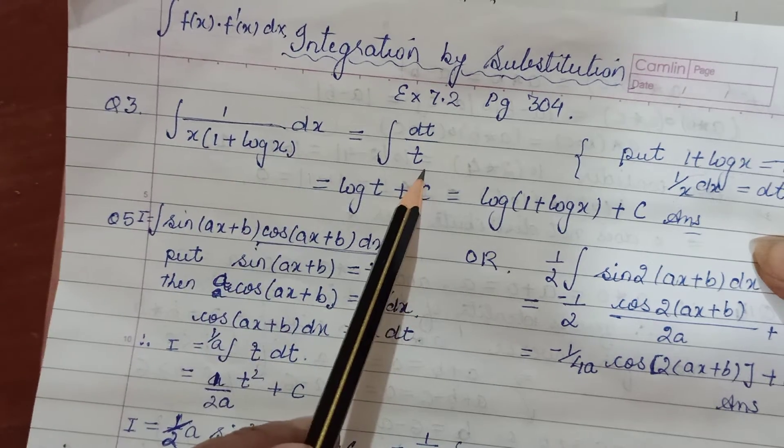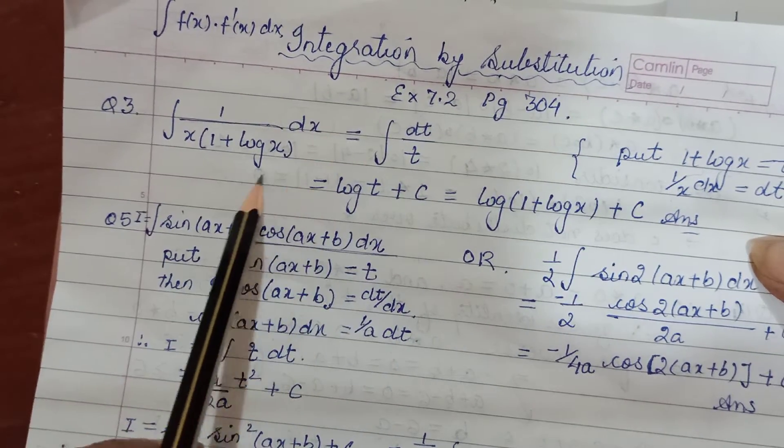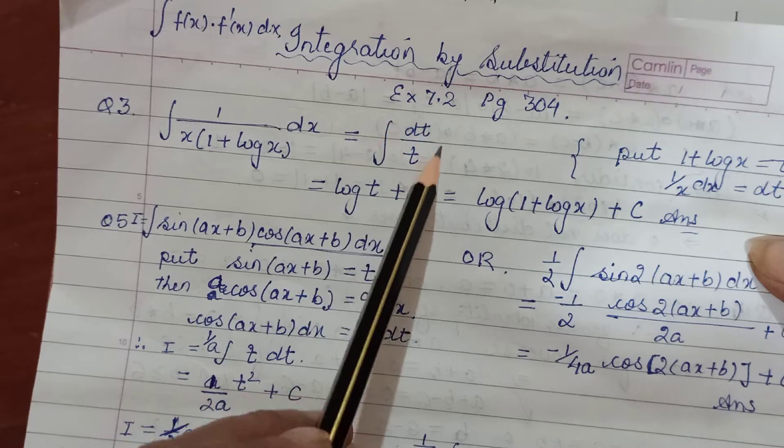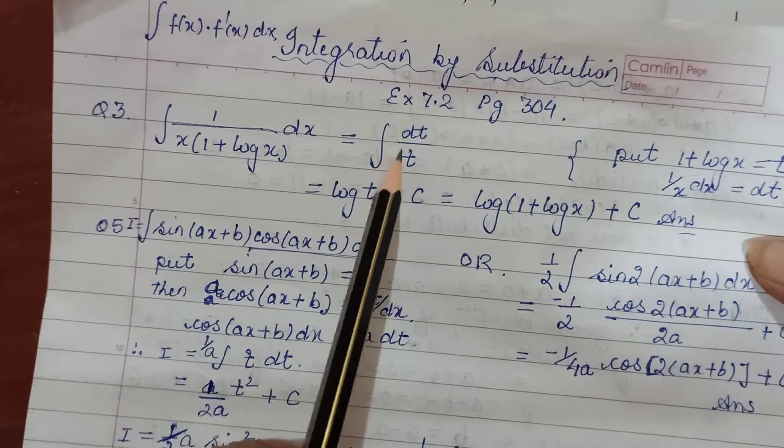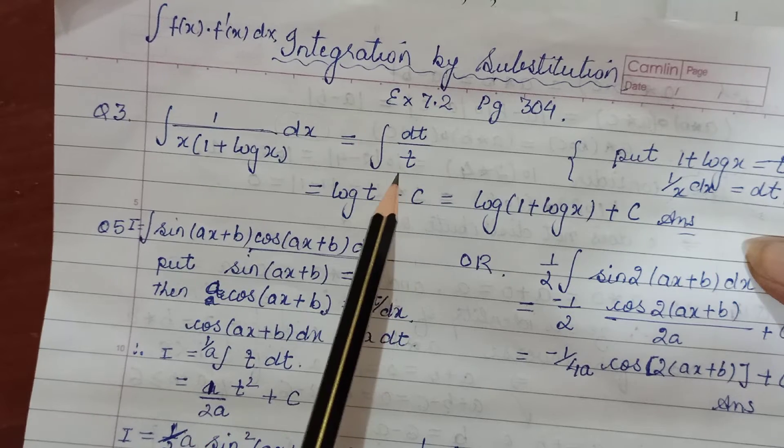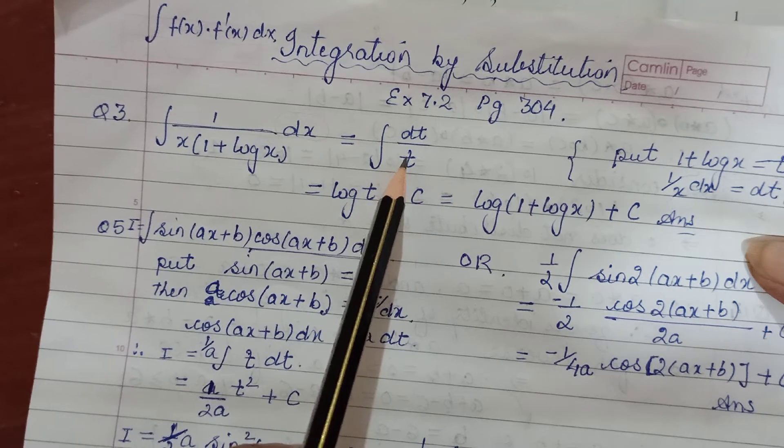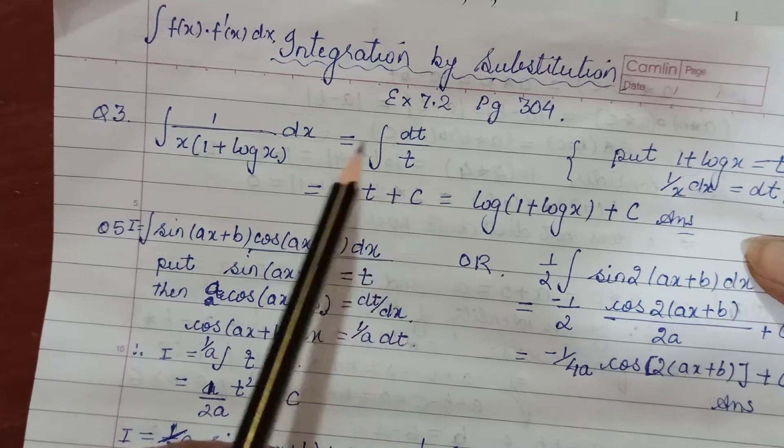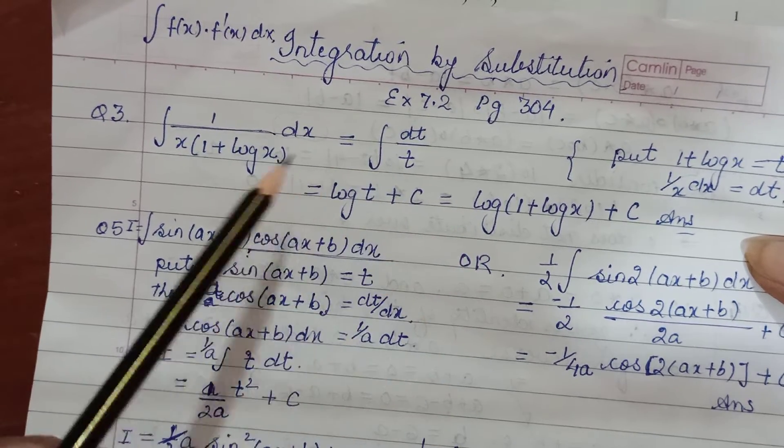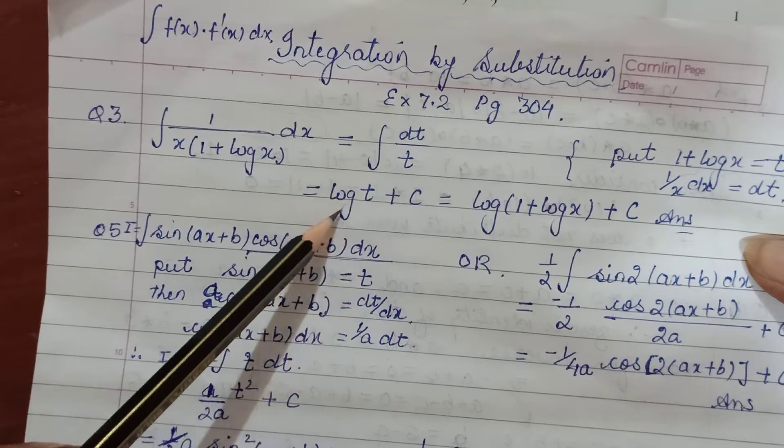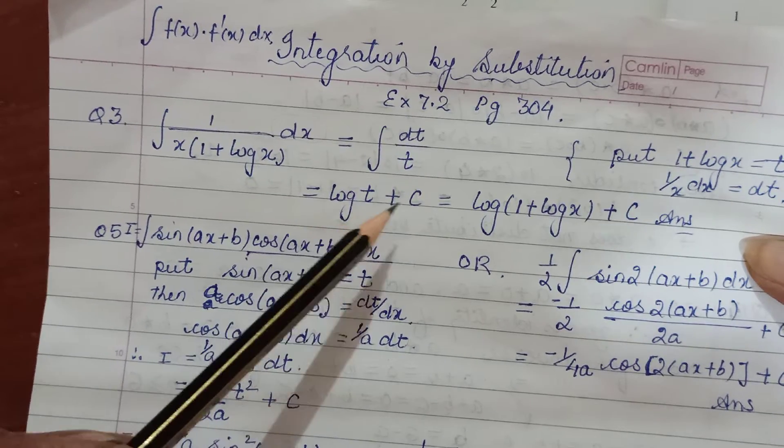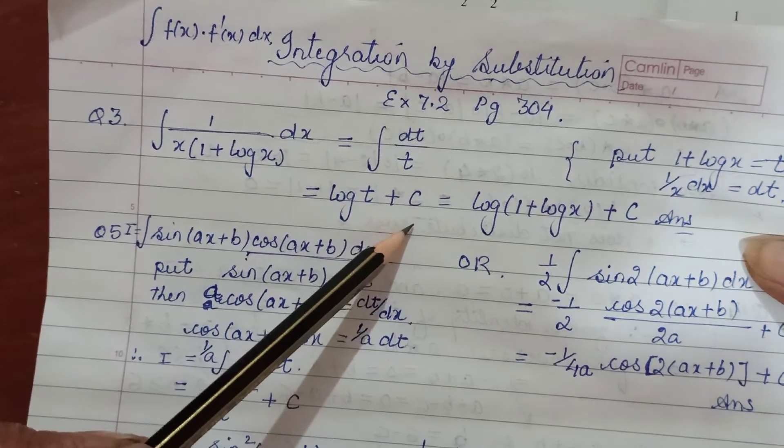So this given expression, which was that way, after substitution becomes simpler, reduces to this much. And then 1 upon t dt, yeh direct result a gya. This is integral of - this is log of t. X mein tha ho, variable kuch bhi yosakta hai: x, y, t, anything. So we know 1 upon t dt's integral would be log t, and constant of integration has to come in.